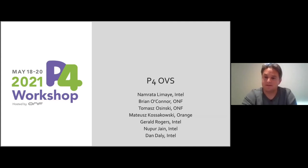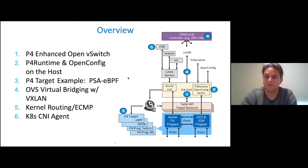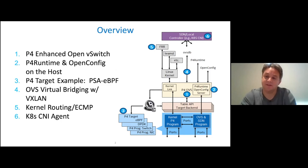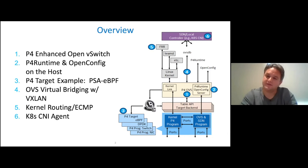This tutorial has been broken down into six different parts. In the first three parts we're going to talk about the architecture and how we're developing the software for P4OVS. In the second set of three we're going to talk about a few examples, and each of the examples is showing a different path to program P4OVS and also program the pipeline underneath. Some of the things that are different in P4OVS versus regular OVS is that we've added this P4 runtime path to be able to program the data plane underneath.